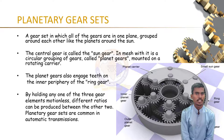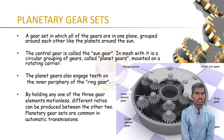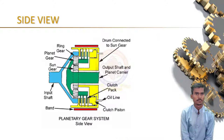Planetary gears are often used when space and weight are an issue but a large amount of speed reduction and torque is needed — for example, in tractors, turbine engines, and electric screwdrivers. This is the side view of the planetary gear clutch.